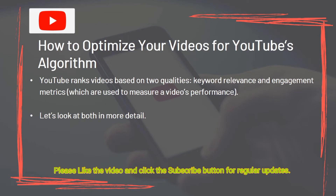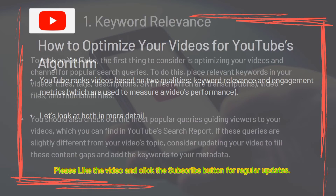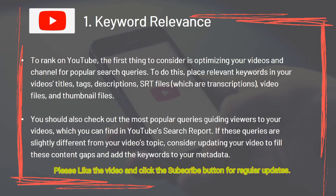How to optimize your videos for YouTube's algorithm. YouTube ranks videos based on two qualities: keyword relevance and engagement metrics. For keyword relevance, place relevant keywords in your video's titles, tags, descriptions, SRT files (transcriptions), video files, and thumbnail files. You should also check out the most popular queries guiding viewers to your videos in YouTube's search report. If these queries differ slightly from your video's topic, consider updating your video to fill content gaps and add the keywords to your metadata.